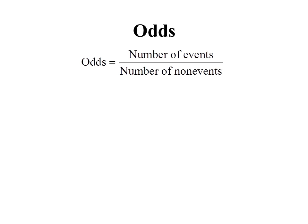Our last set of measurements deals with an idea that we call odds. Odds can be defined as the number of events divided by the number of non-events.